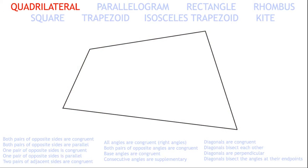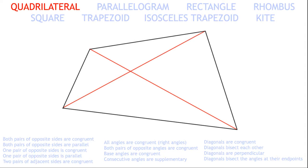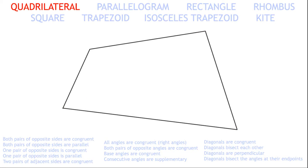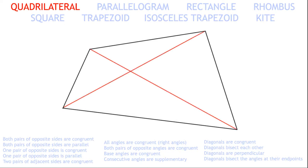This is a quadrilateral. It has four sides, two opposite one another, and four angles, two opposite one another. Hence the name. Its interior angle sum is 360 degrees and it has two diagonals. However, this quadrilateral is not a special quadrilateral. The only thing special about this quadrilateral is that it is not special — it identifies with zero properties regarding congruence, parallel lines, and uniformity of angles or diagonals.